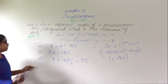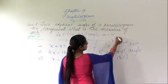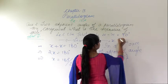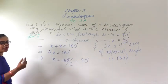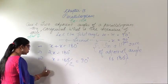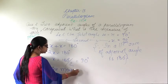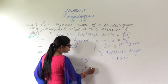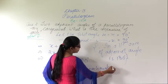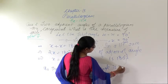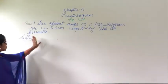So what is the measure of each angle? Both are X, so this is also 90 degrees and this is also 90 degrees. The measure of each angle is 90 degrees. This is the answer.